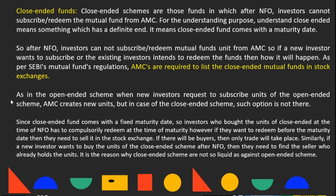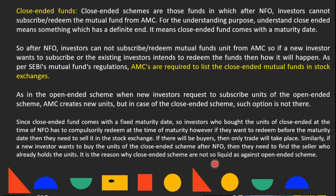In open-ended schemes, when new investors request to subscribe units, AMC creates new units. But in close-ended schemes, such an option is not available. Since close-ended funds come with a fixed maturity date, investors who bought units at the time of NFO must compulsorily redeem at maturity. However, if they want to redeem before the maturity date, they need to sell on the stock exchange — a trade will only take place if there is a buyer. Similarly, a new investor wanting to buy after the NFO period needs to find a seller who already holds the unit.